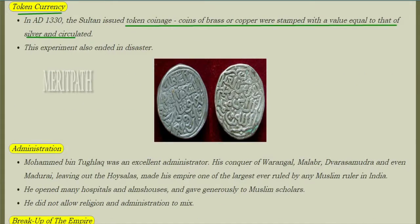Then came token currency. In the AD 1330s, the Sultan issued token coinage — coins made of brass and copper were assigned a value equal to that of silver and circulated. But this experiment ended in a disaster.